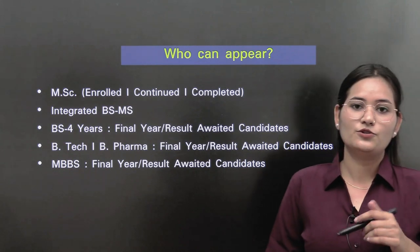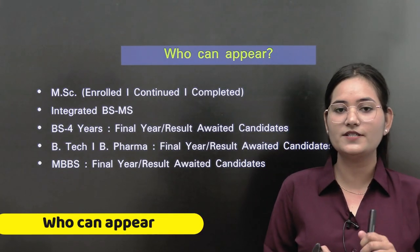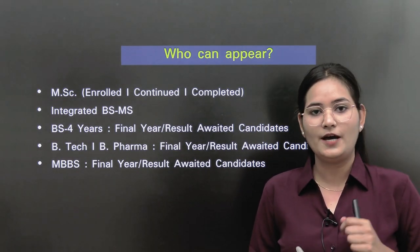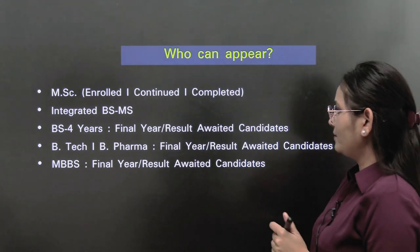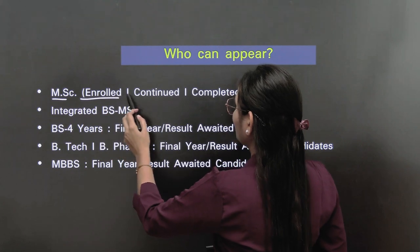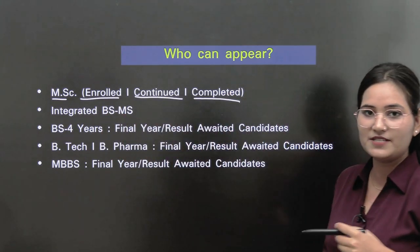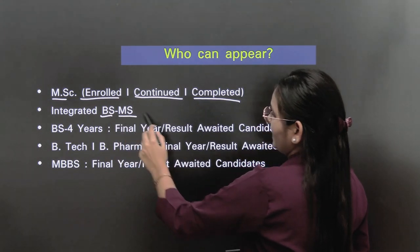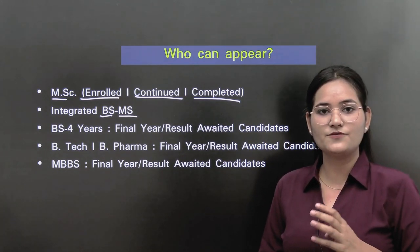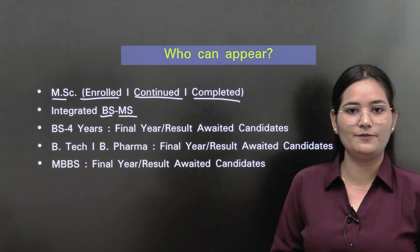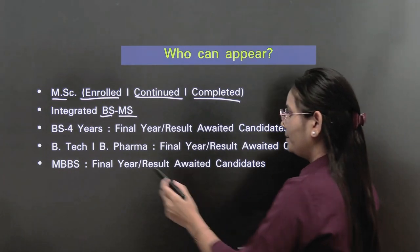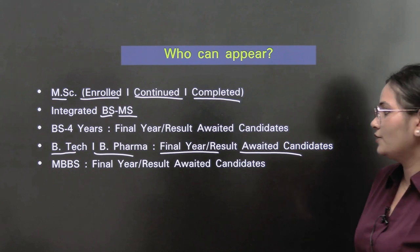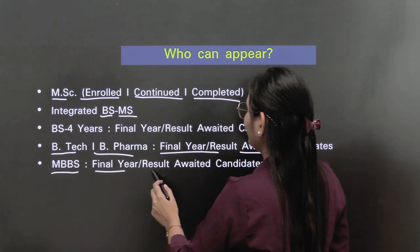Now coming to who can appear. You can be an MSc student — enrolled, continuing, or completed. You can be an Integrated BS-MS or Bachelor of Science and Master of Science student, or BS-MS fourth year final year student, result-awaited candidate. You can also be a B.Tech or B.Pharma final year student, or an MBBS final year and result-awaited candidate.